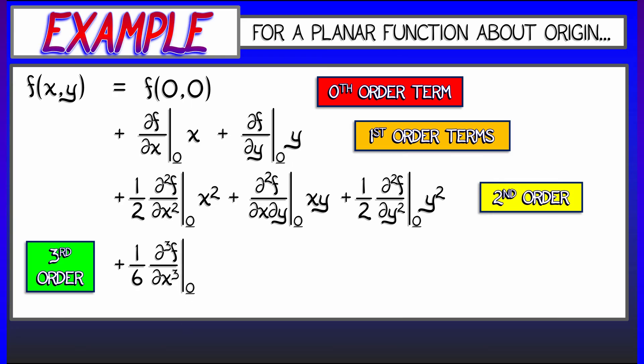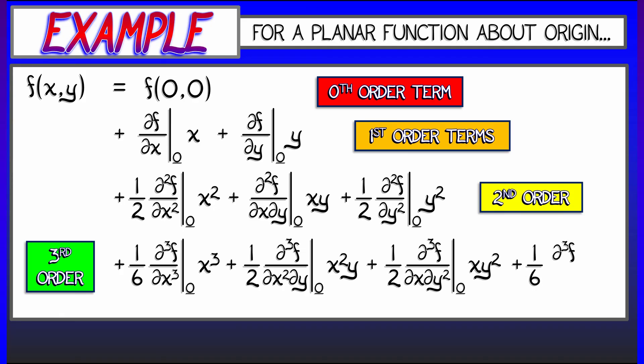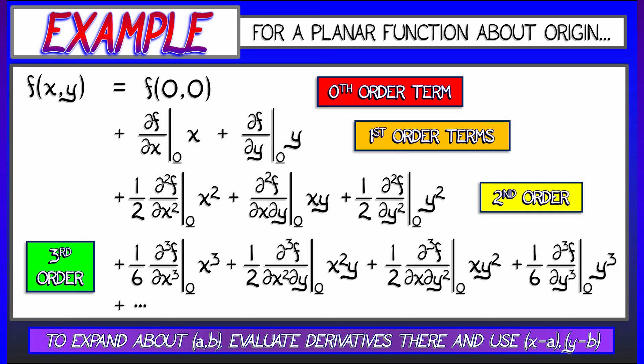The third order terms follow a similar pattern with the pure third order partial, third partial of f with respect to x. We've got a one sixth out in front, one over three factorial. Whereas for the mixed third partials, we have the third partial of f, second partial of x, second partial of y, or first partial in x, second partial of y. We've got one halves in front of those, and then again for the third partial of f with respect to y, we've got one sixth out in front.